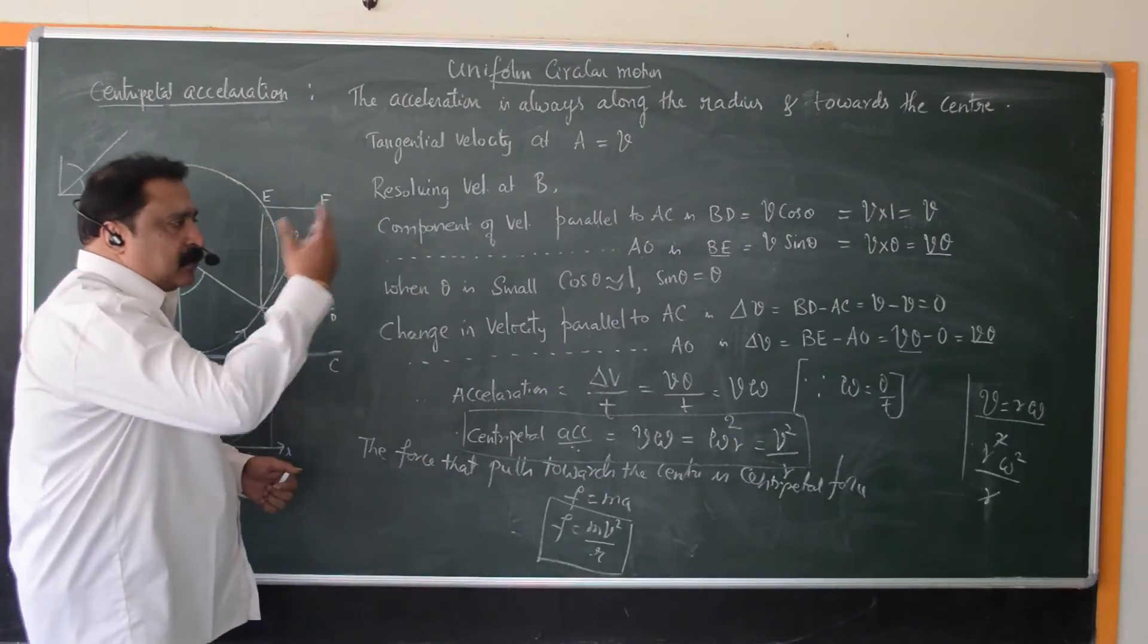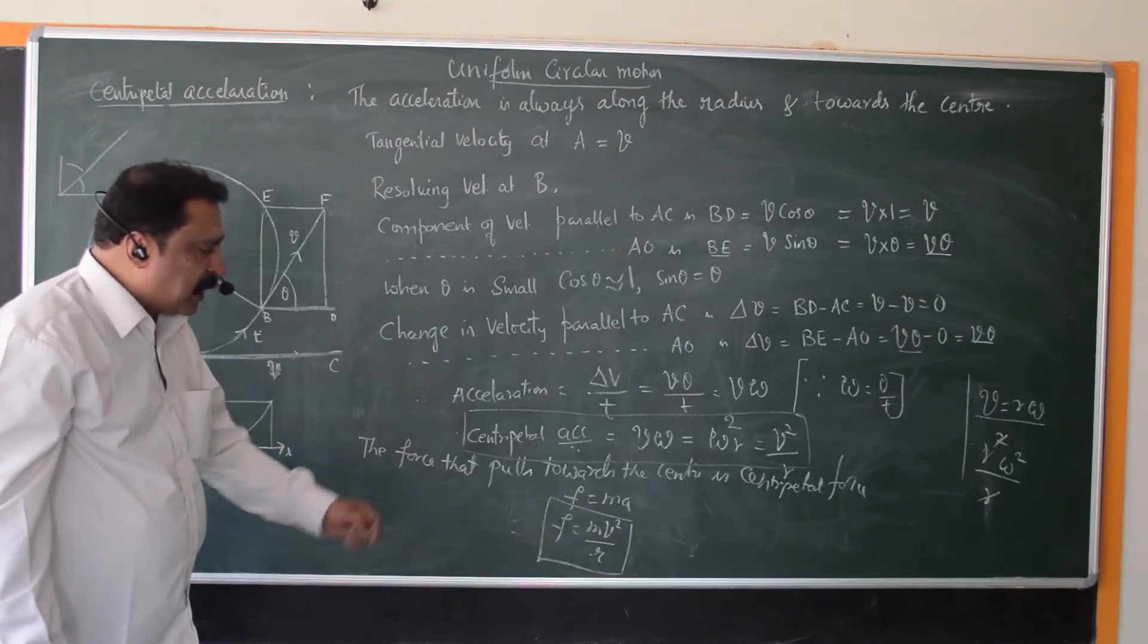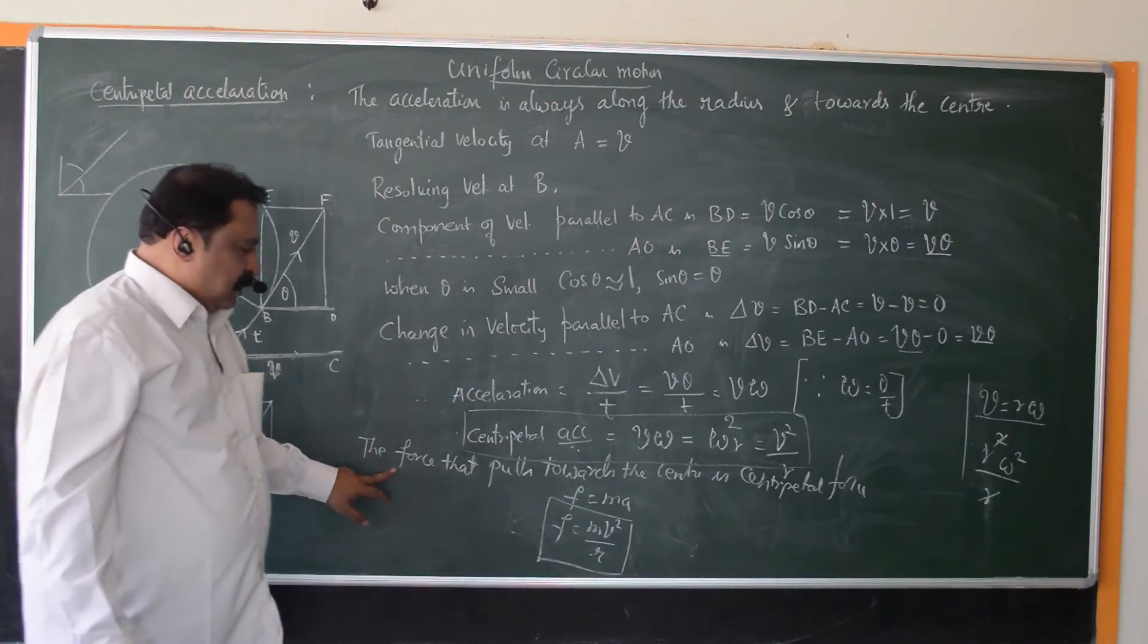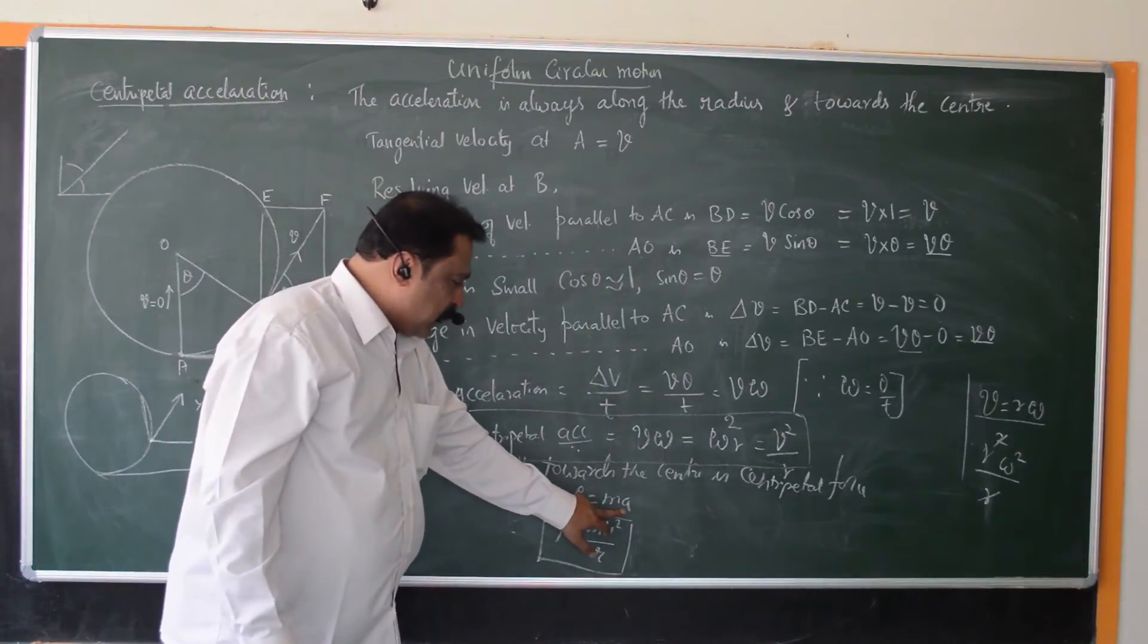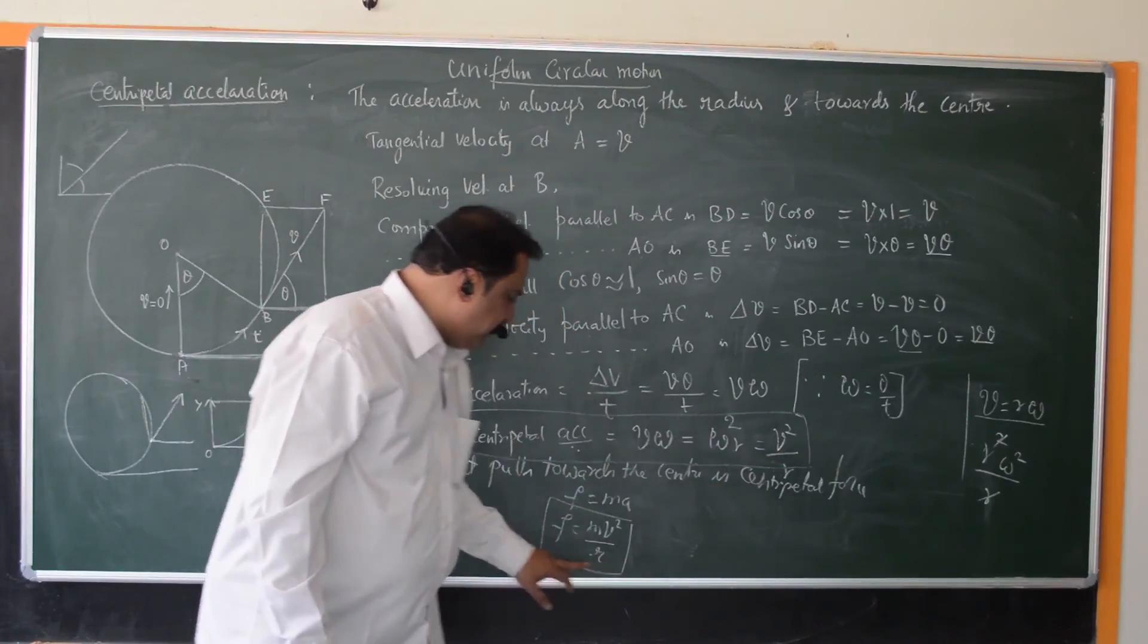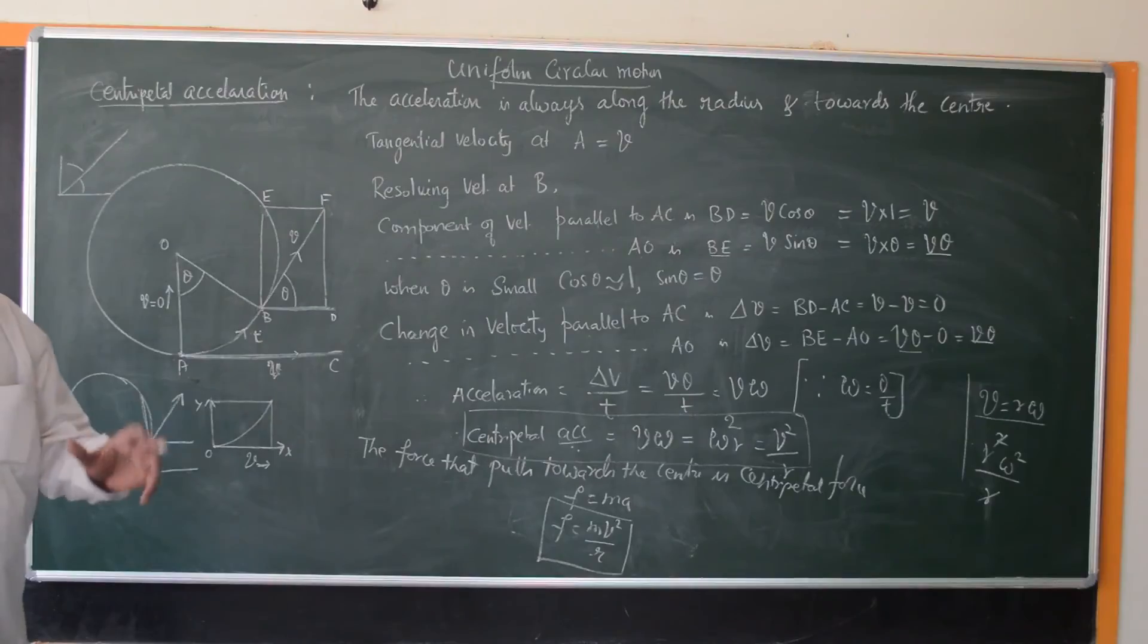Now this particle in circular motion is constantly acted by a force called centripetal force which acts towards the center of the circle. And you know that force equals mass into acceleration. So F equals M into acceleration, substitute for acceleration as V square by R. We get the standard expression for the centripetal force acting on a particle describing circular motion.